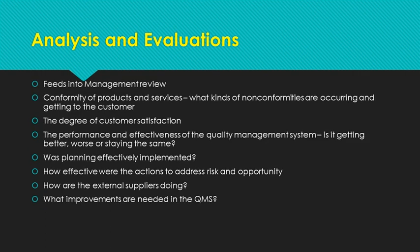For analysis and evaluation: while Section 9.1.3 does not ask for a review of trends, it will be required for the management review. It is beneficial to compare Section 9.1.3 with 9.3 management review — they are very similar. The organization should provide data on conformity of products and services, what kinds of nonconformances are occurring and whether they're getting to the customer, the degree of customer satisfaction, and the performance and effectiveness of the QMS — is it getting better, worse, or staying the same? Was planning effectively implemented? How effective were the actions taken to address risk and opportunity? How are the external suppliers doing, and what improvements are needed in the QMS?